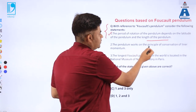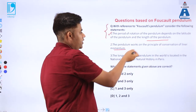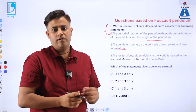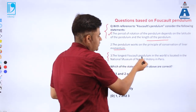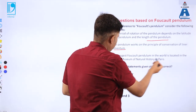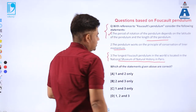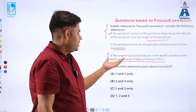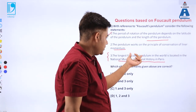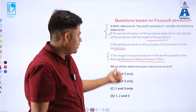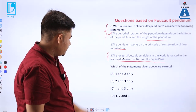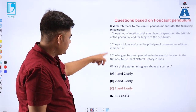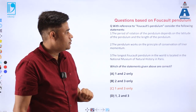Statement two says the pendulum works on the principle of conservation of linear momentum. We have not discussed linear momentum in the context of Foucault's pendulum, so this statement is false. Statement three says the longest Foucault's pendulum in the world is located in the National Museum of Natural History in Paris — this is true. So statements one and three are correct, and statement two is not.